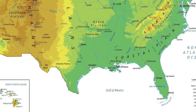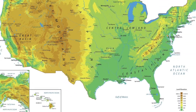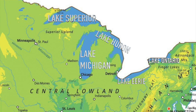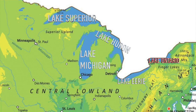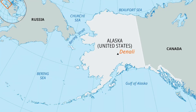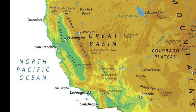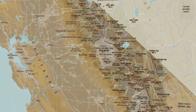One, two, three, four, five, six — that's how many lakes. Here we go. Lake Erie, Lake Huron, Lake Michigan, Lake Okeechobee, Lake Ontario, Lake Superior. Denali, or Mount McKinley. Pacific Ocean, Rocky Mountains, Sierra Nevada.